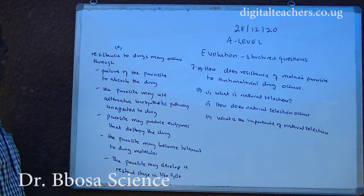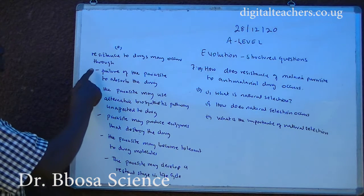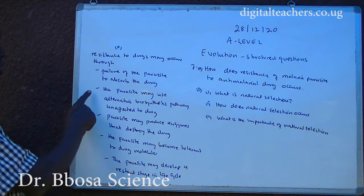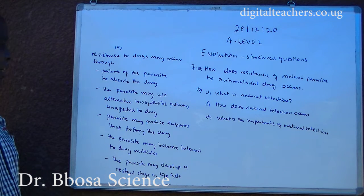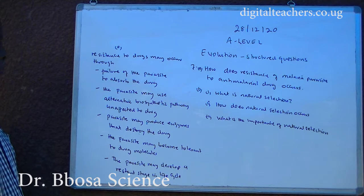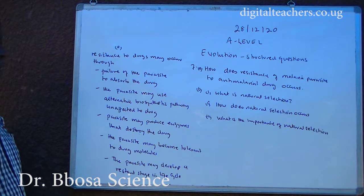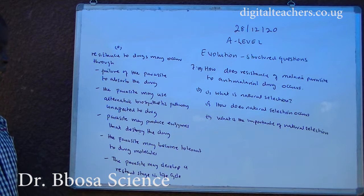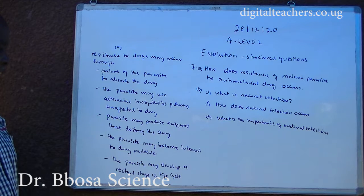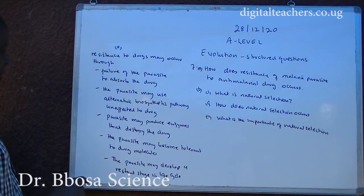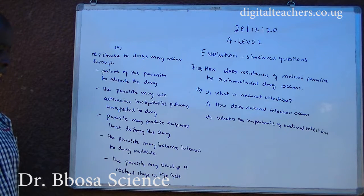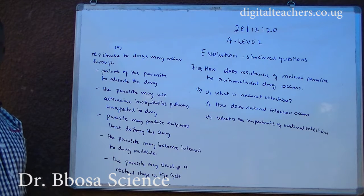A. Resistance to drugs may occur through: one, failure of the parasite to absorb the drug. Two, the parasite may use alternative biosynthetic pathways unaffected by drugs. Three, parasites may produce enzymes that destroy the drug. Four, the parasite may become tolerant to drug molecules. Five, the parasite may develop resistant stages in the life cycle.